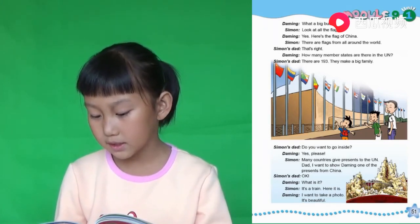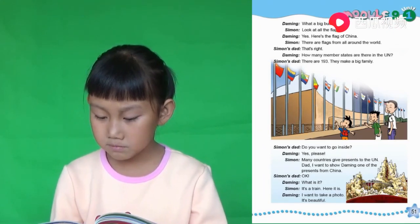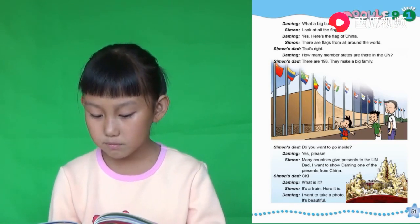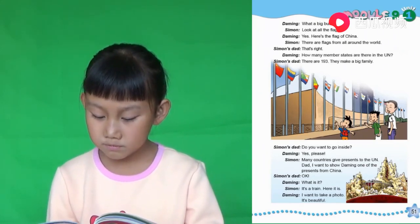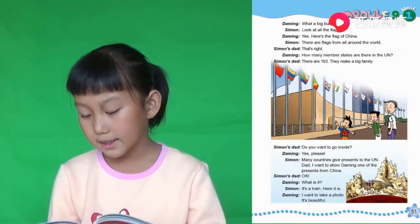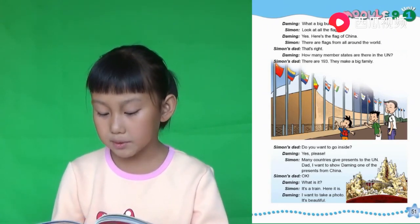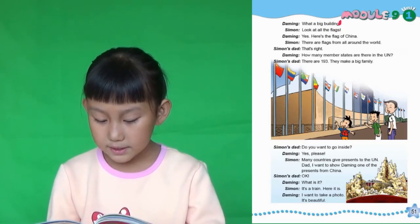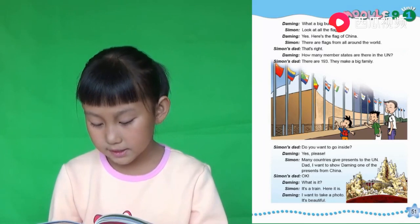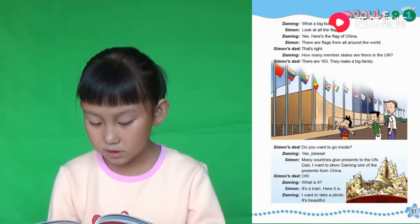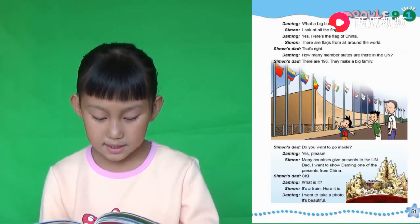Many countries give presents to the UN. 很多国家给联合国礼物. Dad, I want to show 大明 one of the presents from China. 爸,我想要给大明看一个来自中国的礼物. OK. What is it? 它是什么? It's a train. 它是一个火车. Here it is. 它在这儿. I want to take a photo. 我想照一个像. It's beautiful. 它很美丽.